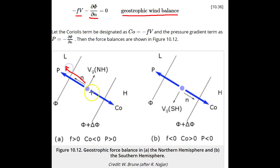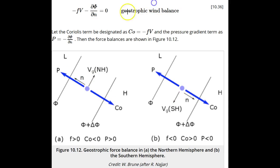The pressure gradient is opposed by the Coriolis force, which is to the right of the velocity vector in the northern hemisphere and to the left of the velocity vector in the southern hemisphere. Note that we can find the geostrophic velocity if we know the pressure gradient on a constant height surface or the geopotential or height gradient on a constant pressure surface.